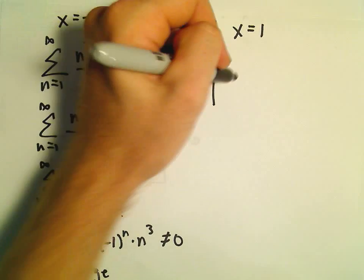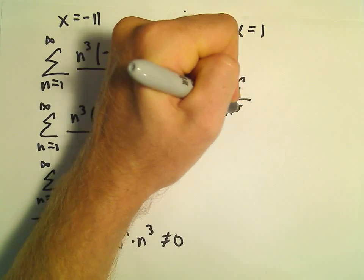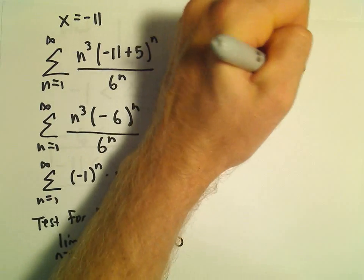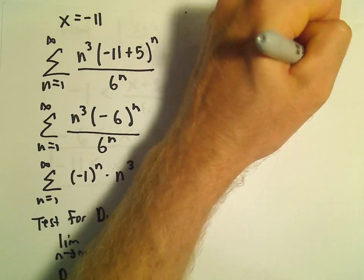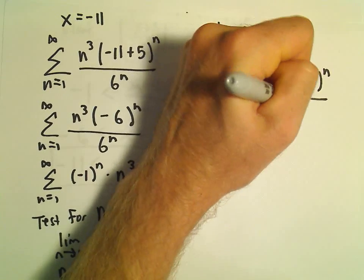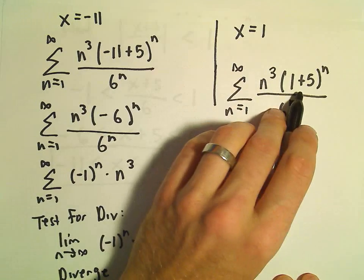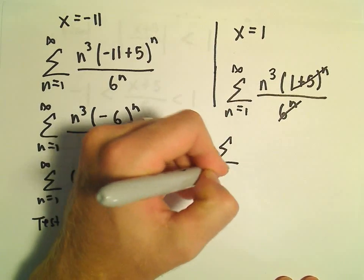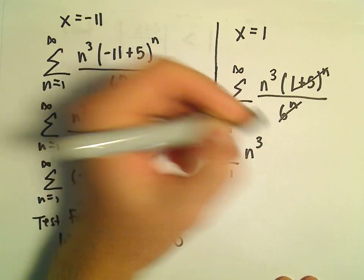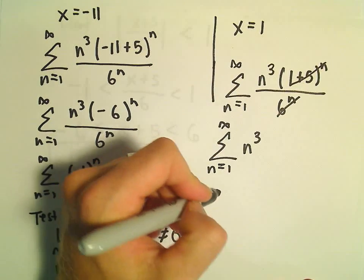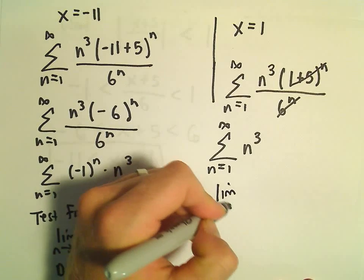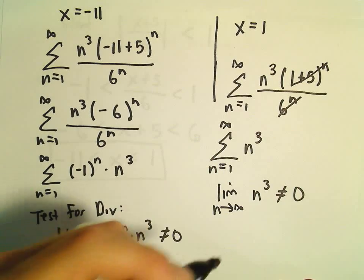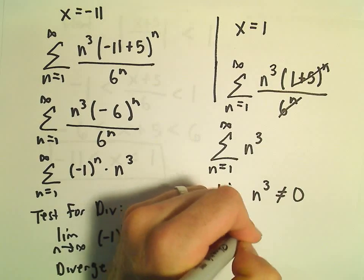The same thing when we plug in x equals 1. We've got the series from 1 to infinity: n cubed times 1 plus 5 to the n over 6 to the n. Well, this is 6 to the n over 6 to the n — those cancel — so we're left with the series from n equals 1 to infinity of n cubed. By the test for divergence, the limit as n goes to infinity of n cubed does not equal 0, so that series also diverges.